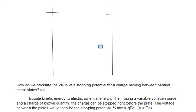All right, now we're on to movie number five and part two of our video answer key for electrostatics review. So the question is, how do we calculate the stopping potential for a charge moving between parallel metal plates? Well, stopping potential means stopping voltage.